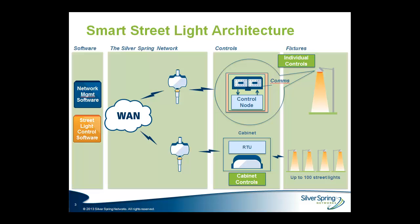Silver Spring's view of the smart streetlight architecture includes four separate components. The first component, as you can see all the way towards the right, is the actual fixture. Making the streetlight smart requires being able to connect it and control it using back-office software.